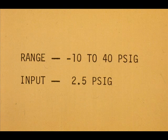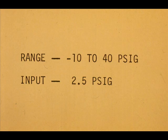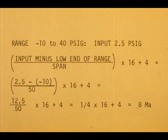Did anyone have trouble with the last one? The minus 10 to 40 PSIG range with 2.5 PSI input. The span for the range minus 10 to 40 is 50. The 2.5 minus a minus 10 gives a plus 12.5. The answer is 8 milliamps.